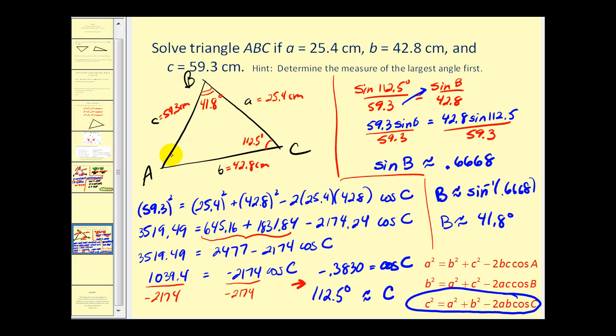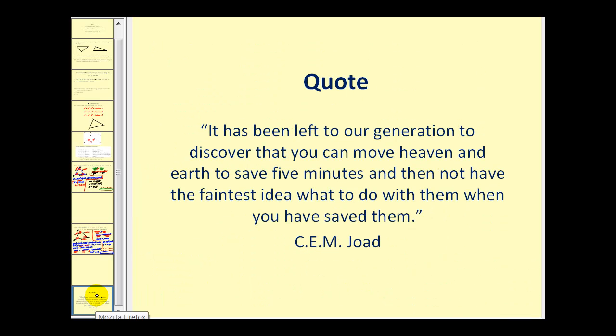Now we can determine this last angle since we know the sum must be 180 degrees. So angle A measures approximately 25.7 degrees. That should do it for the law of cosines. There is another video that deals with applications involving law of cosines. Thank you for watching and have a good day.